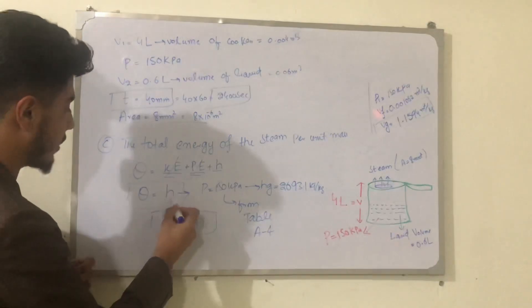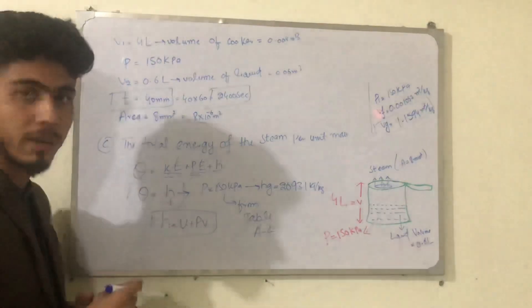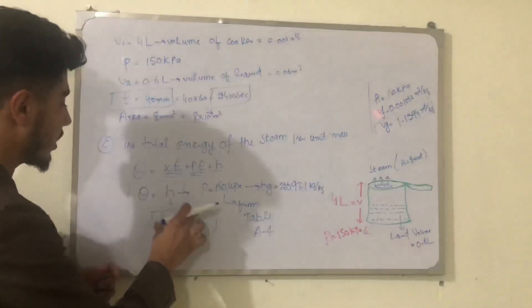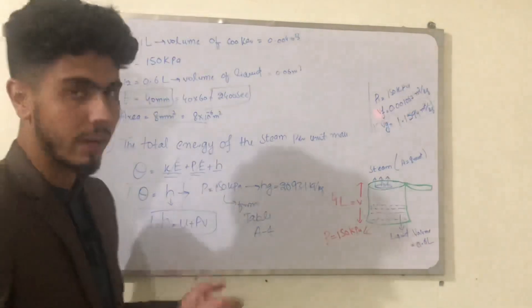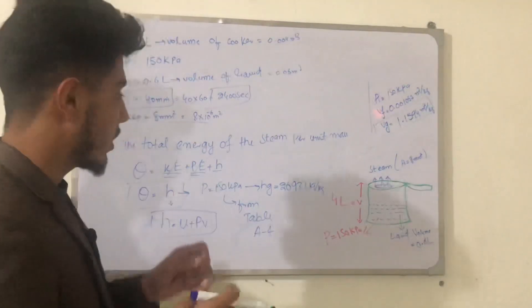To find enthalpy, the formula is: enthalpy equals internal energy plus the product of pressure and volume. Alternatively, another method can also be used to find the enthalpy.